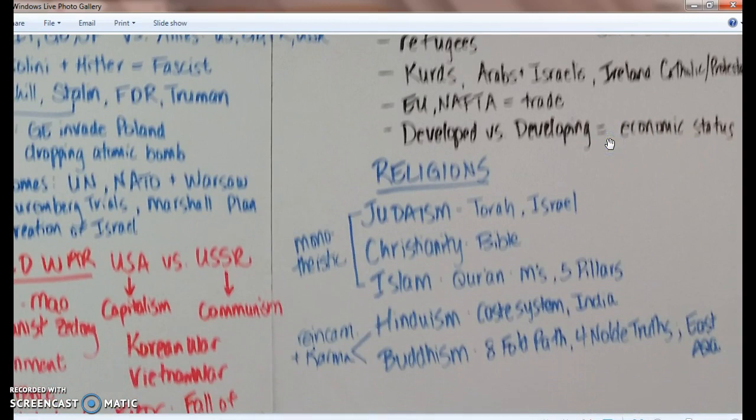Religions: Judaism, Christianity, and Islam are monotheistic religions. Hinduism — think caste system, India. Buddhism — think Eightfold Path and Four Noble Truths; they're in East Asia: China, Vietnam, Cambodia, Japan. For Islam, remember the M's: Muhammad, Mosque, Mecca, Medina — and the Five Pillars: Faith, Prayer, Alms, Fasting, Pilgrimage — and the Quran; they're in the Middle East. Christianity is most of the world today. Judaism: remember Israel and the Torah.